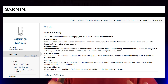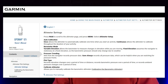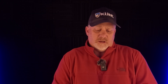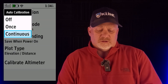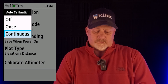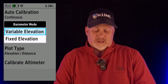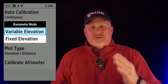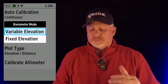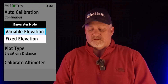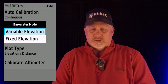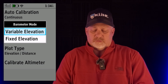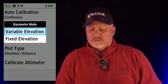I'm going to have something on screen that goes through each one — it's from the support.garmin site and I'll have a link in the description below. You can go into each one and change it. Right now I have my auto calibration on continuous, and there's also off and once. Then there's barometer mode, and I have it on variable. If you're going to stay in a fixed position, you would pick fixed elevation, but if you're hiking and moving, you want variable mode — that's what the support.garmin page says.